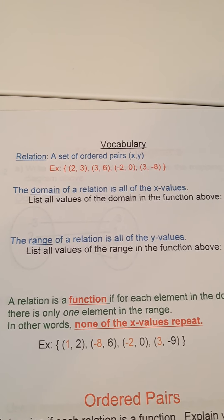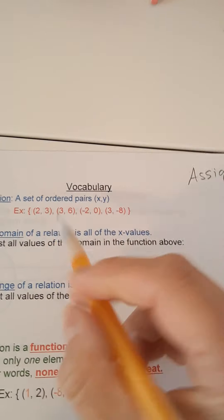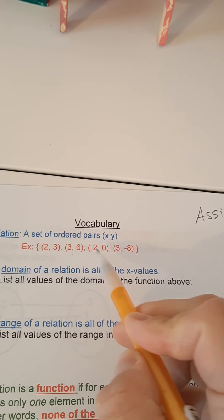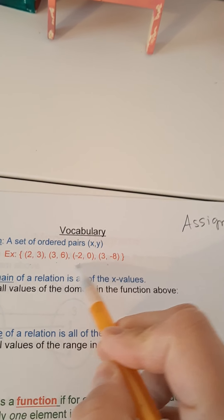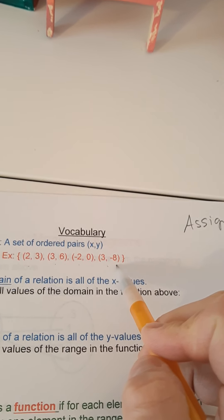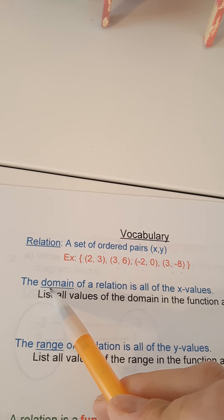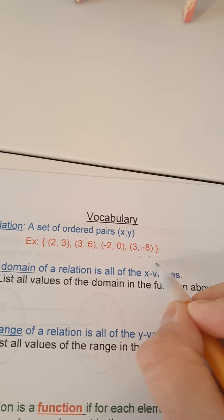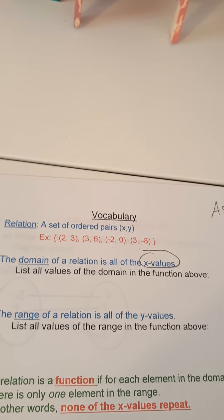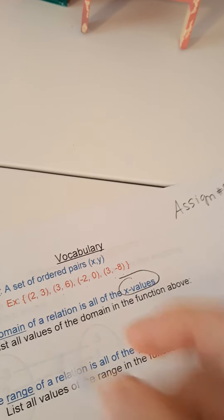A relation is a set of ordered pairs, literally just in squiggly brackets any ordered pairs, any coordinates. You already know that the domain is the possible x values so let's list all the values of the domain here.